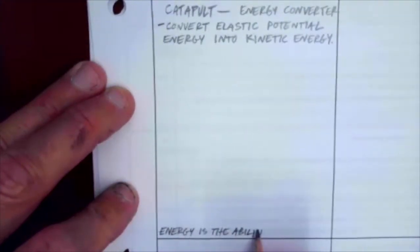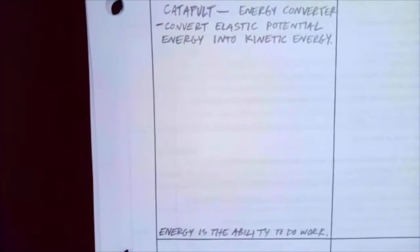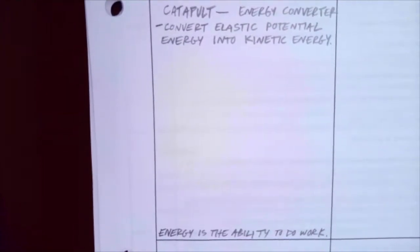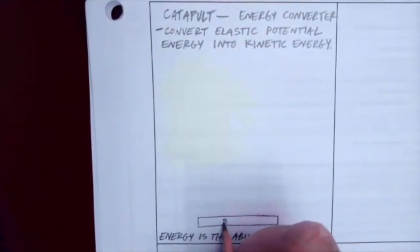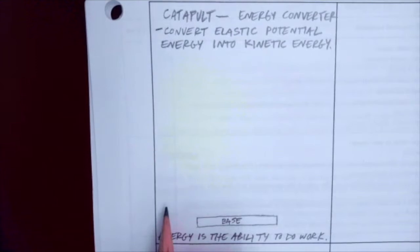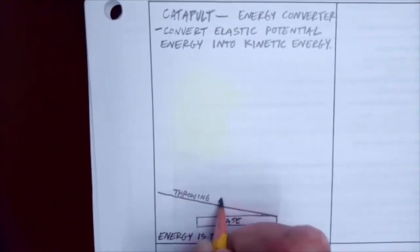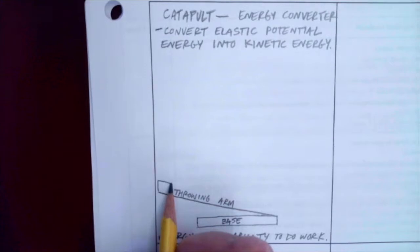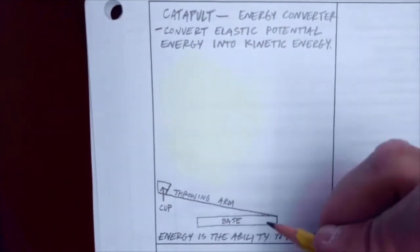Of course, work also has a very specific and explicit definition in physics that is not the same as its definition in other places, but we'll skip that. Catapult is an energy converter that converts elastic potential energy into kinetic energy. So essentially, you got some kind of a base for your catapult. You've got some kind of a throwing arm.